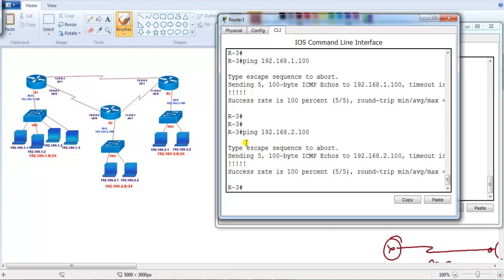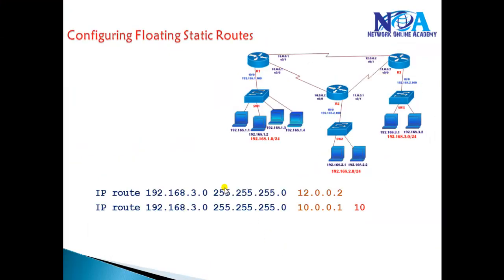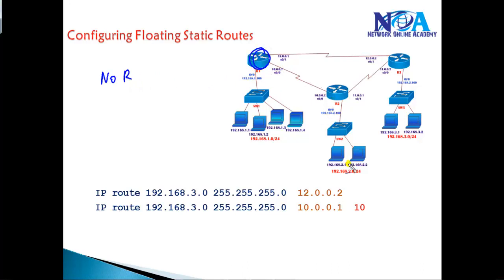Once we're done with static routing, the next thing we'll do is verify some of the advanced options of static routing — we call them floating static routes. One major drawback with normal static routing is that everything has to be manually configured by the administrator, and at the same time there is no redundancy. For example, from Router 1 to reach the Router 2 LAN interface, I'm using one route — but what happens if that route fails? It becomes a single point of failure.